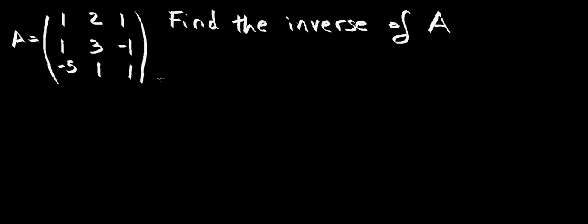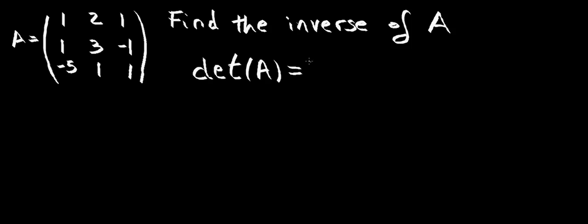Hello, in this video I'm going to be solving and calculating the inverse of this 3x3 matrix using the adjoint method. The first thing we need to do is check if that inverse actually exists. We do that by calculating the determinant of matrix A, which in this case is giving us a value of 28. That means the inverse actually does exist.